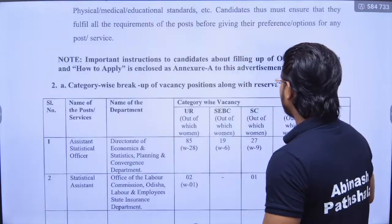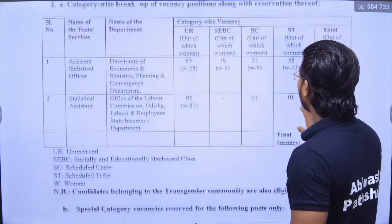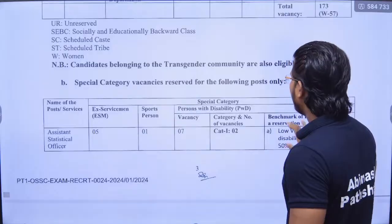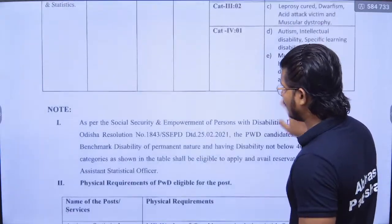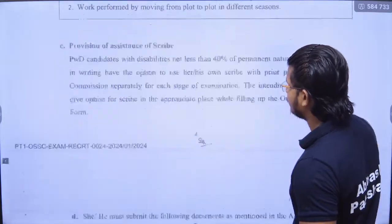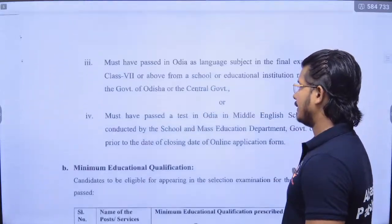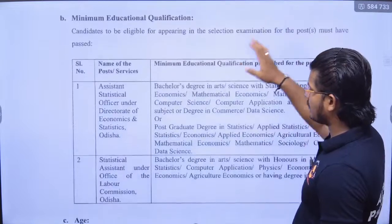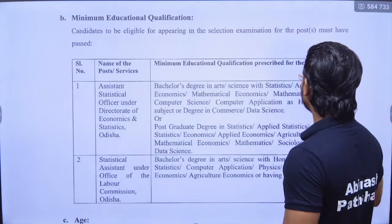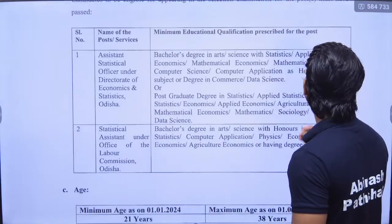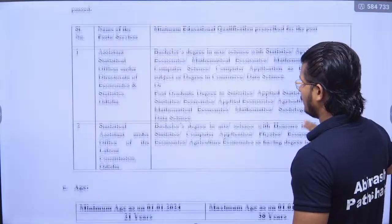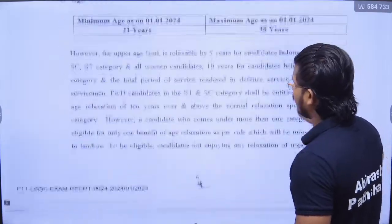Applications are open for those who have already applied and for those who want to apply. The minimum education qualification is a bachelor's degree in Arts, Science, Applied Statistics, Economics, Mathematics, or Sociology — so STEM and social science students can apply.